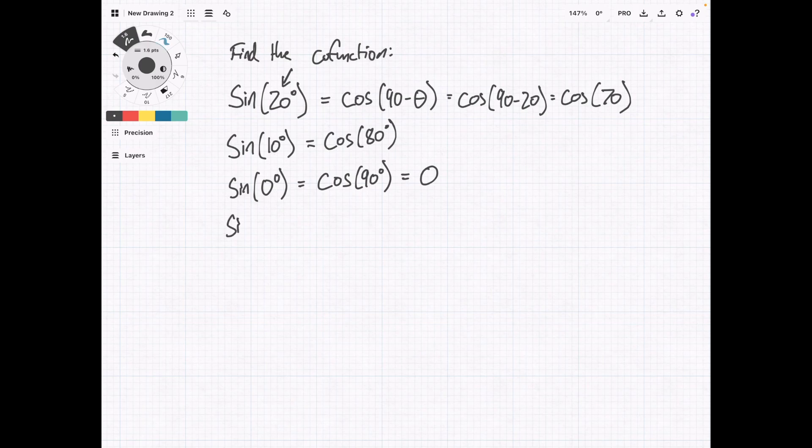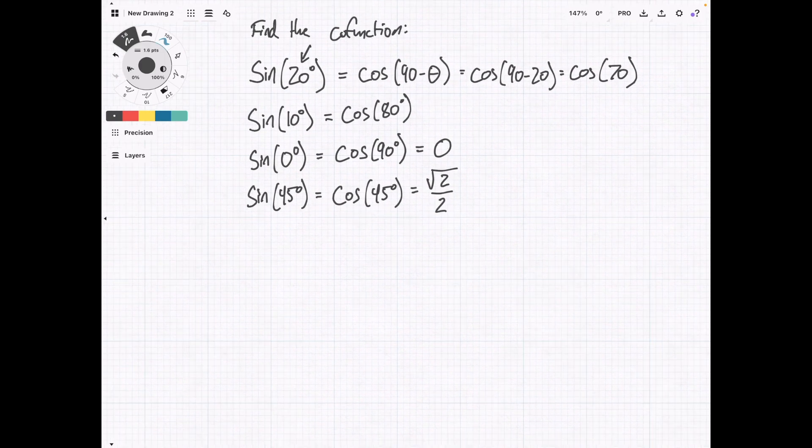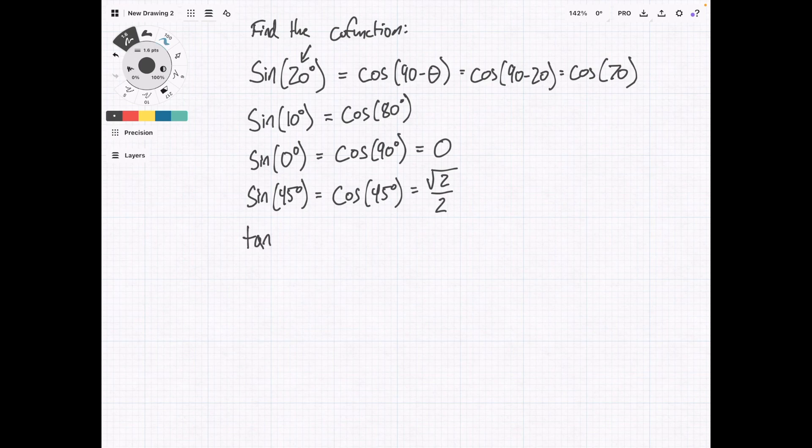Then we have sine of 45 degrees equals cosine of 45 degrees. If you remember the unit circle, both of these are equal to square root of 2 over 2. If we step away from sine just a little bit, we can do the same thing for other functions. So say we have tan of 20 degrees. The co-function is going to be cotan of 70 degrees.